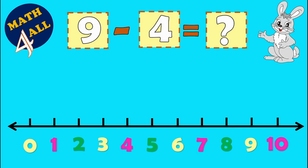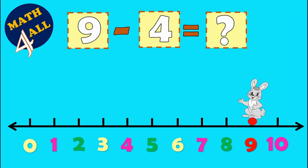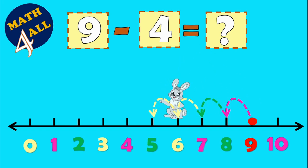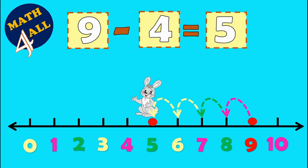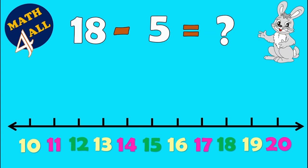Here we have 9 minus 4 equals what. First step: you will stop on the biggest number, number 9. Then you will jump backward 4 jumps: 1, 2, 3, and 4. Mr. Rabbit stops on 5, so that 9 minus 4 equals 5.